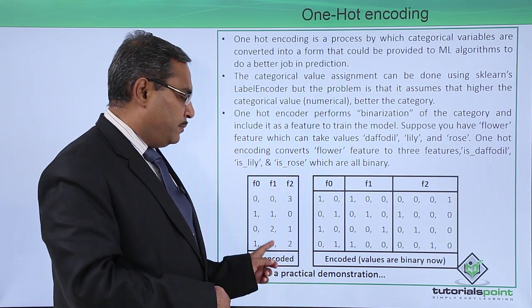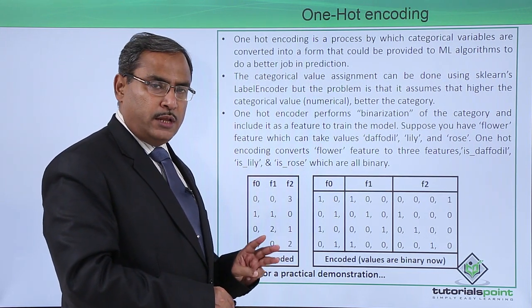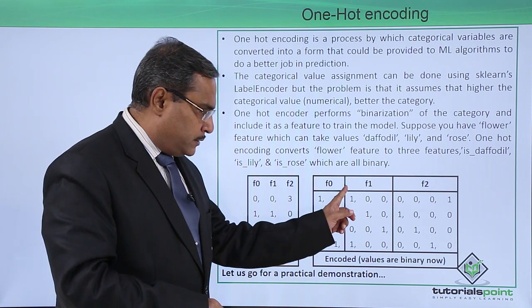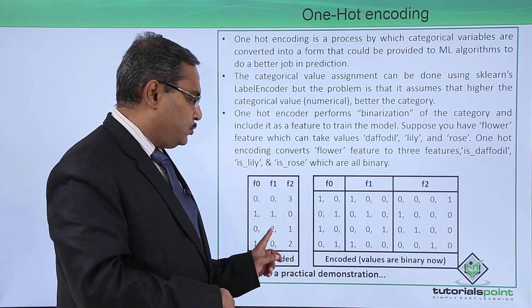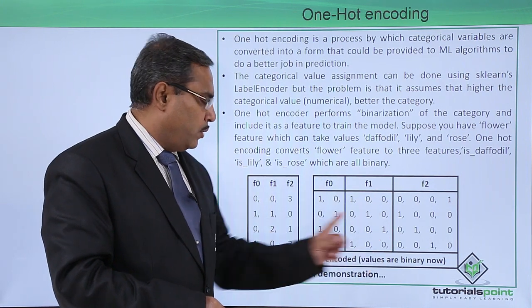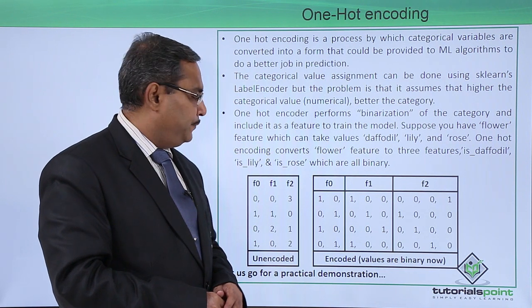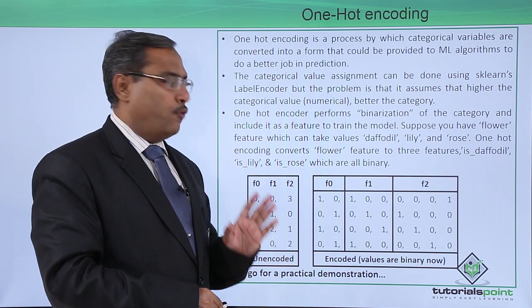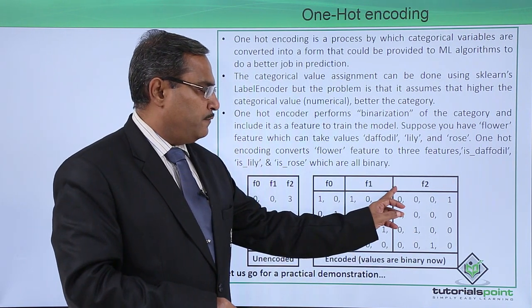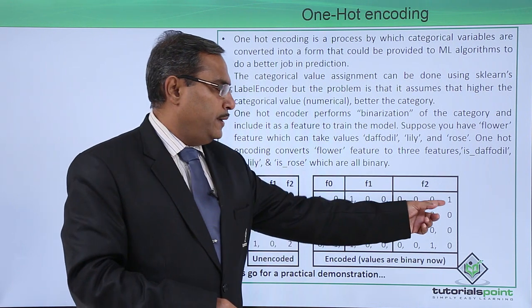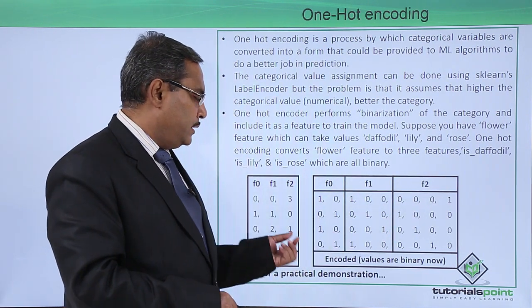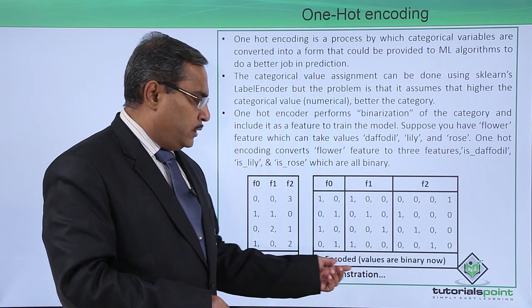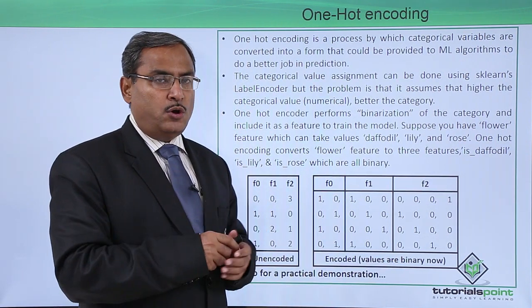For feature number one, which has three values — zero, one, and two — we create three columns. For feature number two, which has four categorical values — zero, one, two, and three — we create four columns. Each row gets a one in the column matching its value; the rest are zeros. The encoded values are all binary.